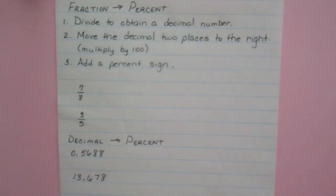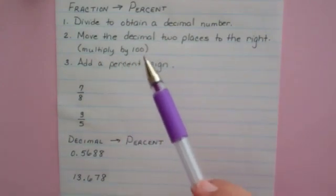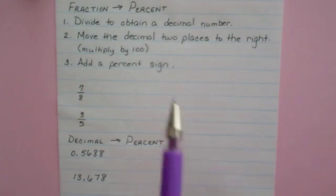If you have a fraction and you want to convert it to a percent, the first thing you have to do is divide out your number, numerator divided by denominator. Once you have your decimal, then you move the decimal two places to the right, which in math is equivalent to multiplying by a hundred. And once you do that, you've got to make sure and add a percent sign. Remember, percent means per 100.